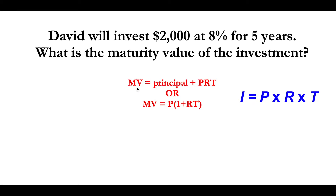The first formula is principal plus PRT, where PRT is basically your interest — so interest equals PRT. Or you can use the second formula: principal times open bracket 1 plus rate, multiplied by time.